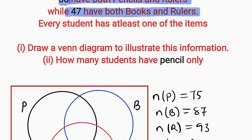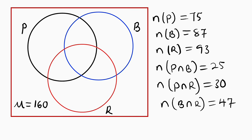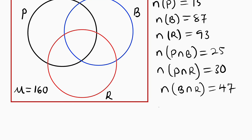Now let me start plugging our data. As always, if you want to insert information into a Venn diagram, always start with the center — this is the intersection between the three sets, and it is not given from the question. Therefore we can declare it with a variable. Let me call it X. So the number of P intersection R intersection B is X.